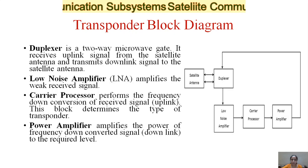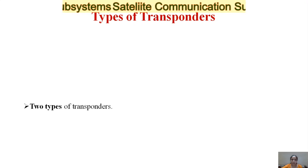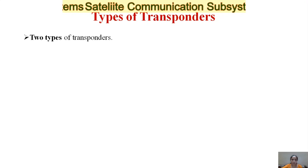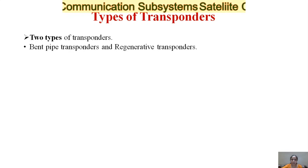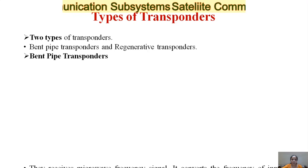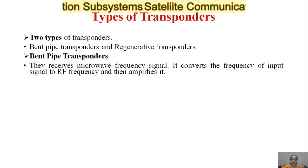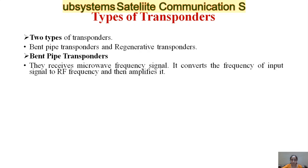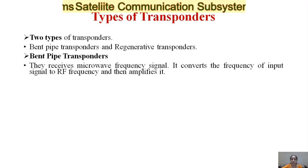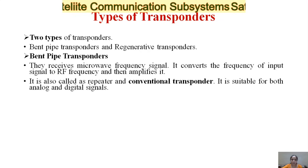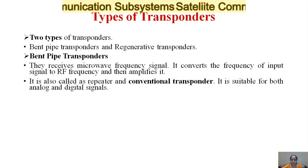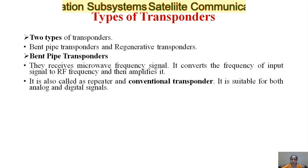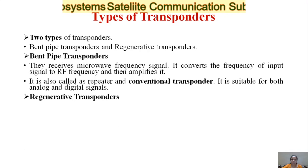The power amplifier amplifies the power of the frequency down-converted downlink signal to the required level. There are basically two types of transponders: the bent-type transponder and the regenerative transponder. Bent-type transponders receive the microwave frequency signal, convert the frequency of the input signal to RF frequency, and then amplify it. It is also called a repeater or conventional transponder and is suitable for both analog and digital signals.